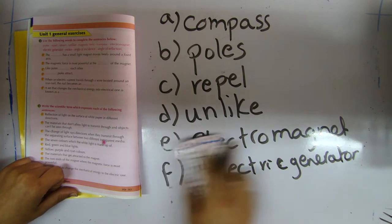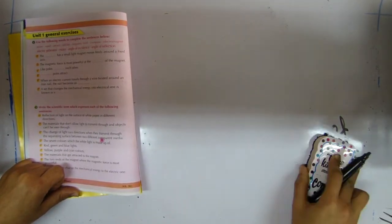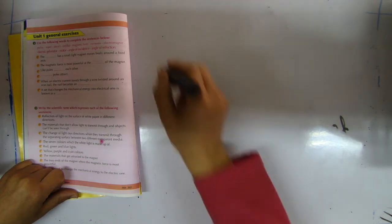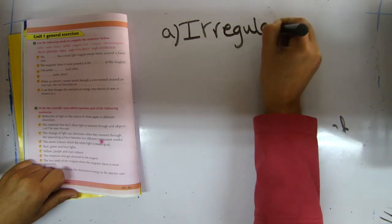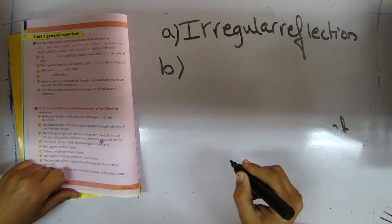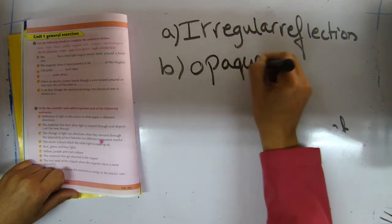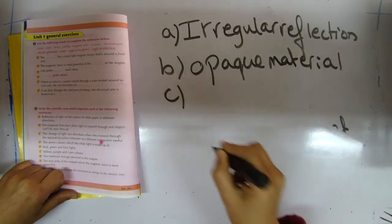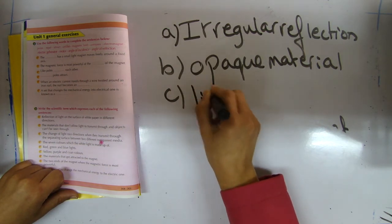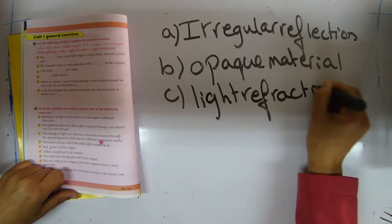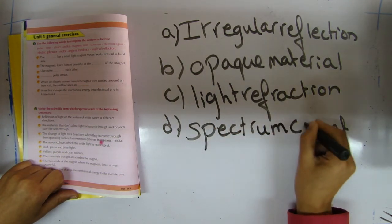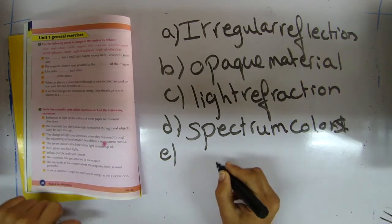The second question: write the scientific term for each of the following. Number one: reflection of light on the surface of white paper in different directions is irregular reflection. Number two: the material that does not allow light to transmit through, so objects cannot be seen through it, is opaque material. Number three: the change of light ray direction when transmitted through the separating surface between two different transparent media is light refraction. Number four: the silver-white moonlight is made up of spectrum colors. Number five: red, green, blue are primary colors.